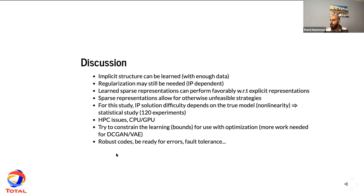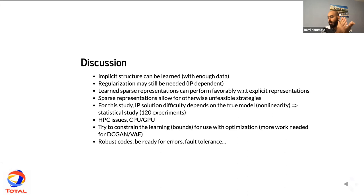To conclude: implicit structure can be learned with enough data, though I still don't have an answer to whether we have enough real, constructed, and synthetic models to do that for 2D or 3D cases. Regularization is still inverse-problem dependent, but learned representations perform favorably with respect to explicit representations when they exist, and they allow global optimization that was not possible before. The best approach is to constrain the bounds of z and the output so we can control these with constrained optimization — which I did well for the fully connected GANs but not sufficiently for DCGAN and VAE, which I need to revisit. With that, I conclude and am ready to take questions.